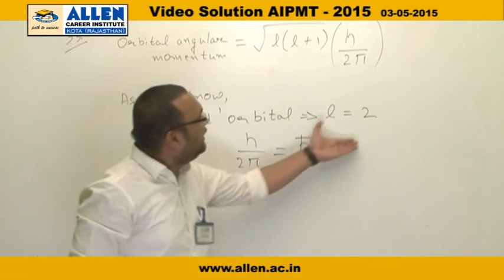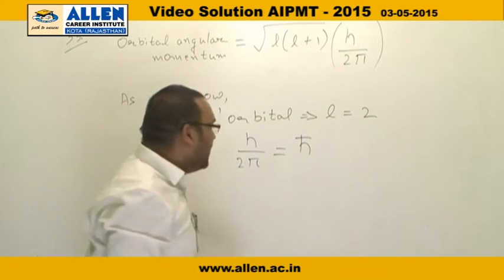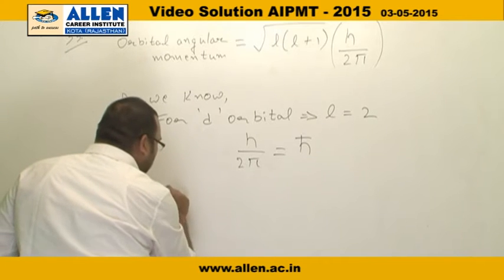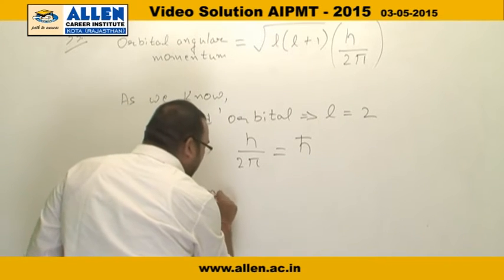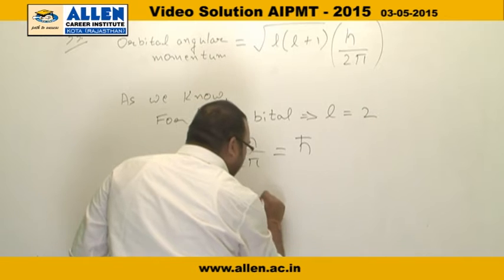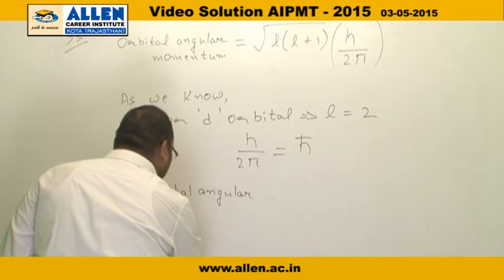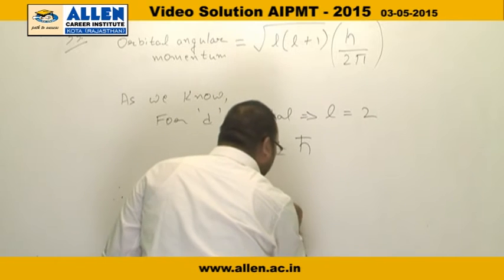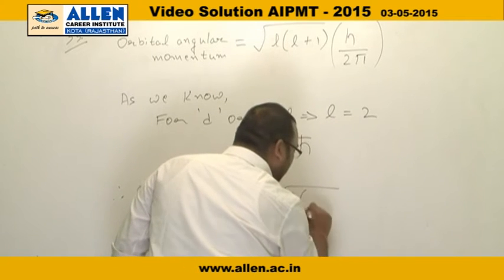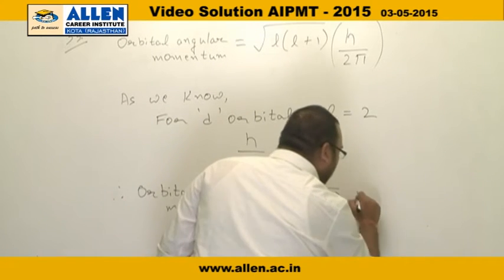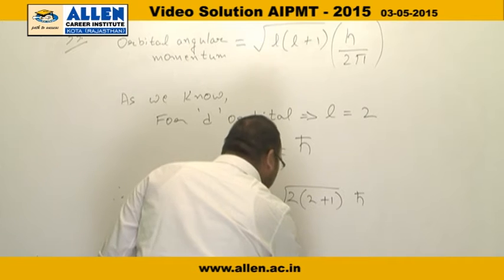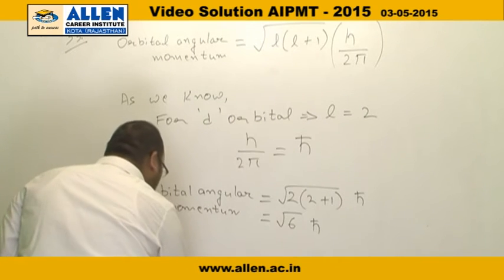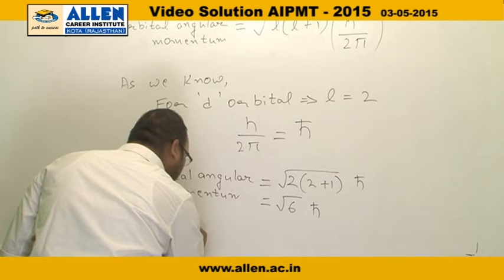Putting these values in the equation, the orbital angular momentum comes out to be square root of 2(2+1)ℏ, which equals √6ℏ. The answer is option number 4.